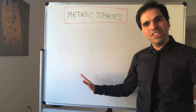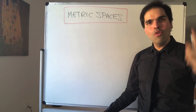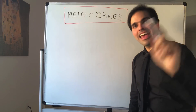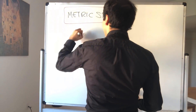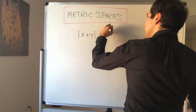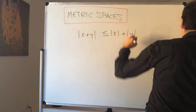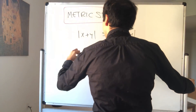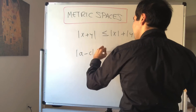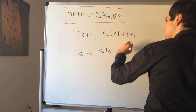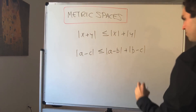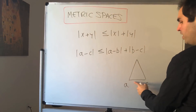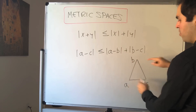If you remember absolute values, there was one identity that we used over and over again in this course — the triangle inequality, which simply says that the absolute value of x plus y is less than or equal to the absolute value of x plus the absolute value of y. From that, we deduce a nice corollary: the distance between a and c is less than or equal to the distance between a and b plus the distance between b and c. We interpreted this as saying that the length of one leg of a triangle is less than or equal to the sum of the other two legs.